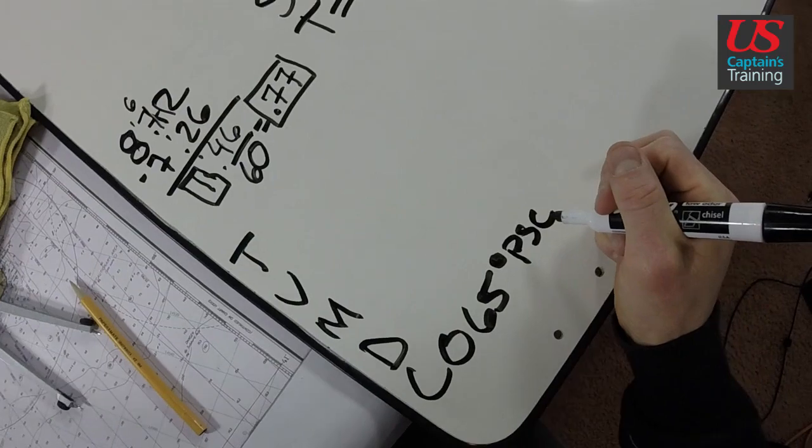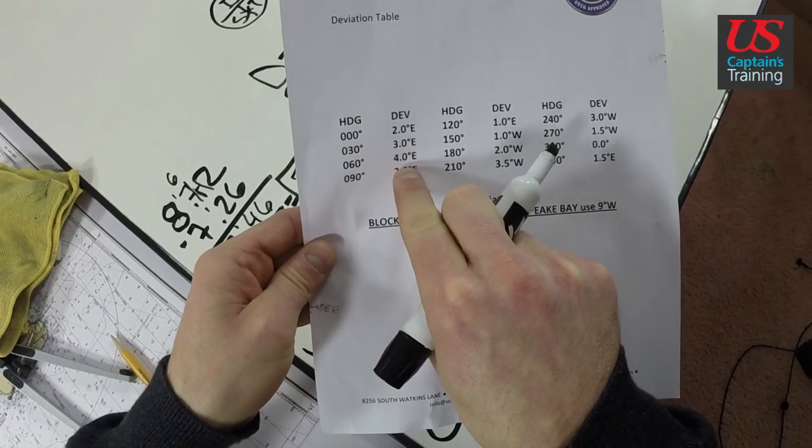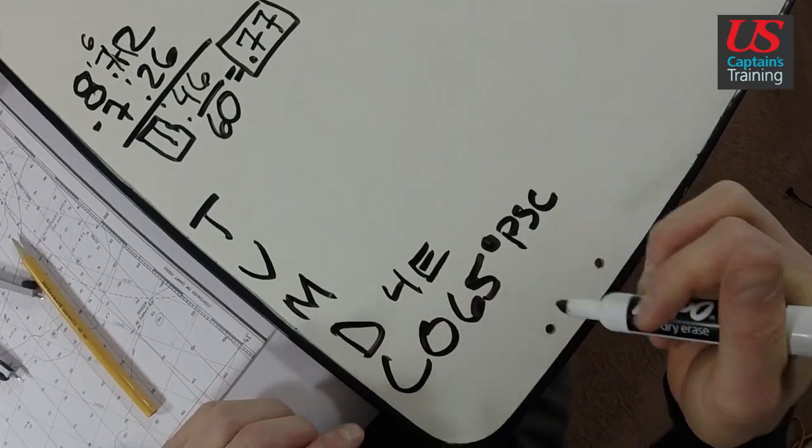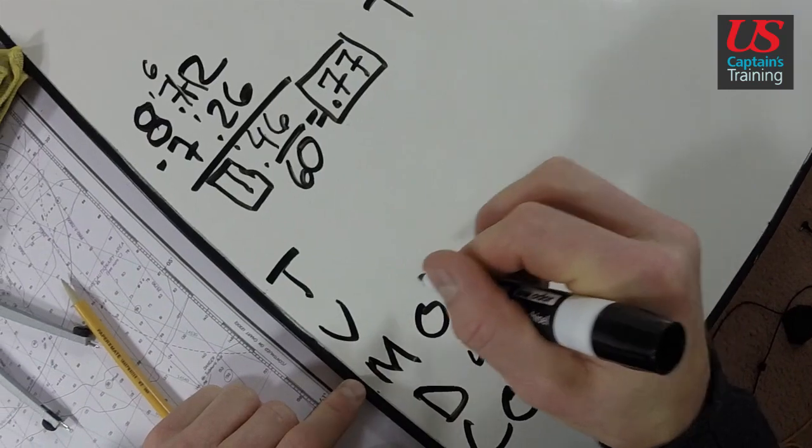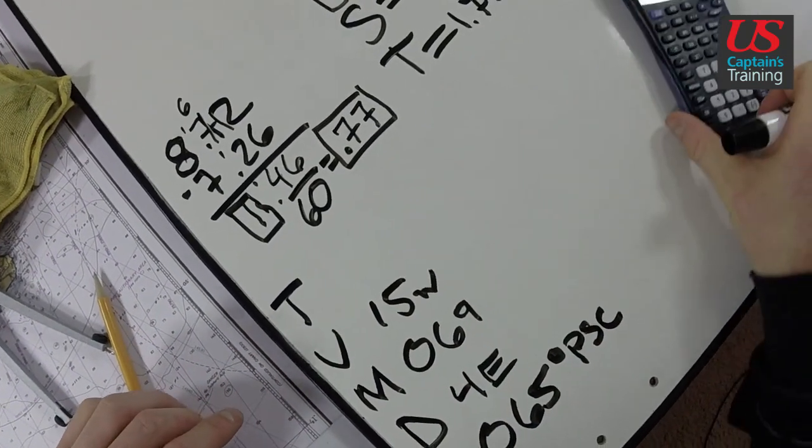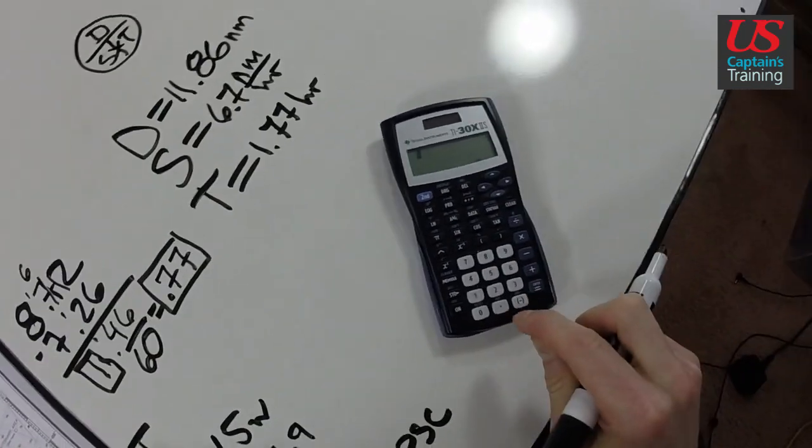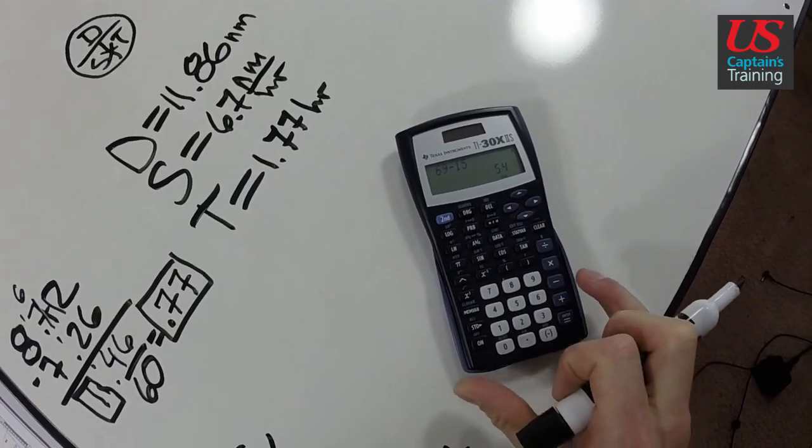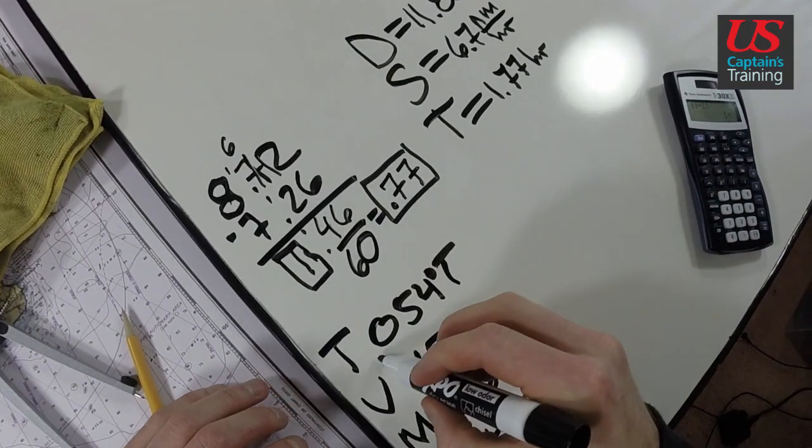What is the deviation? 065, we're about 4 east. 75 would be 3 east, 65 is 4 east. We're going up, we add. 069. Variation 15 west, we subtract it. It's going to come to 54. Let's check it. 69 minus 15 equals 054 degrees true. This is our course.